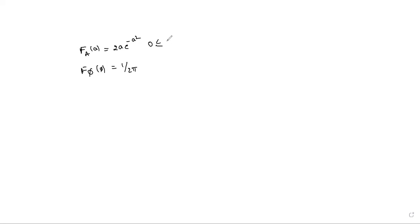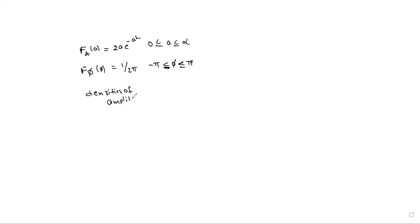Where 0 ≤ a < ∞ and φ is in the range −π to +π. The joint density of amplitude and phase f(a, φ) = (a/π)·e^(−a²), which we can also write as (1/2π) · 2a·e^(−a²).